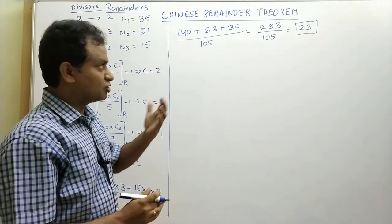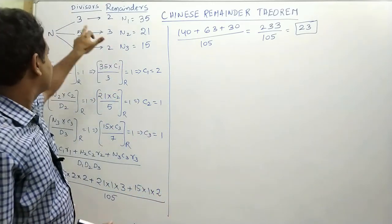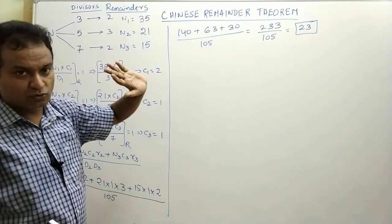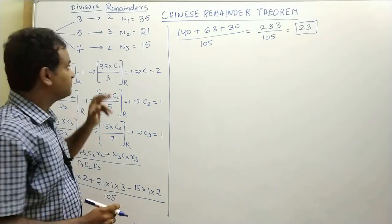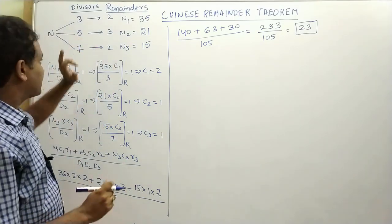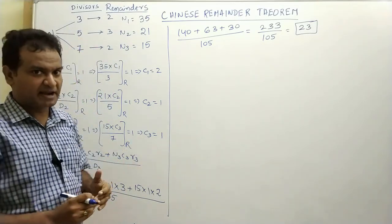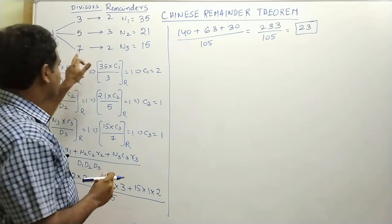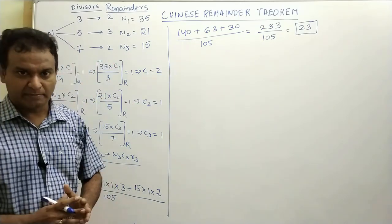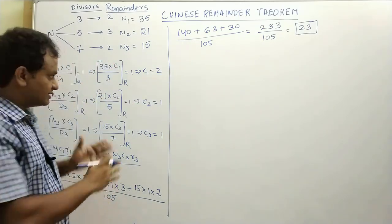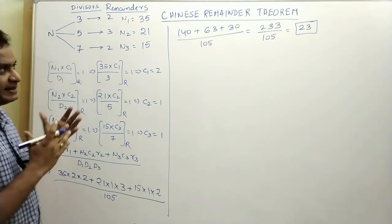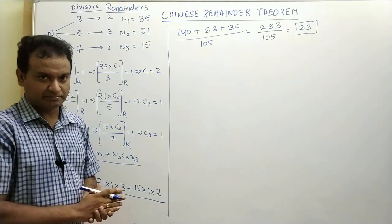Let us cross-check: when you divide 23 by 3, you get a remainder of 2 — yes, 3 goes 7 times into 23. When you divide 23 by 5, you get a remainder of 3. When you divide 23 by 7, you get a remainder of 2. This is the procedure to find the least number using the Gauss algorithm.